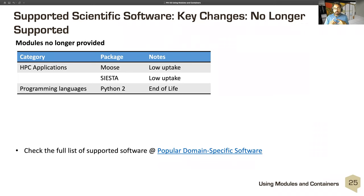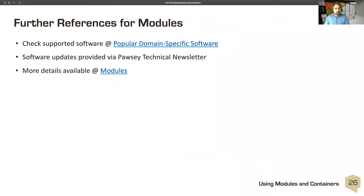One of the key changes from pre-Cetonics to Cetonics is modules that are no longer provided: MOOSE, Siesta, and Python 2 — probably the biggest change for most people. Python 2 is past end of life, so we are no longer providing Python 2 support. If you'd like your own personal Python 2 through something like Conda, see module 4 or the documentation. For further references on modules, check the supported software link and the more detailed documentation for modules specifically.